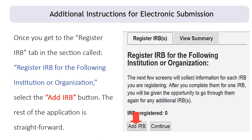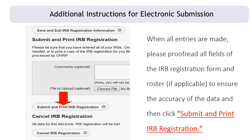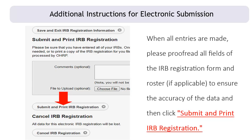Once you get to the Register IRB tab in the section called 'Register IRB for the following institution or organization,' select the Add IRB button. The rest of the application is straightforward. You will need to be sure all required asterisk fields are completed. Once you have entered information on each screen and proofread all data fields, click on the Save and Continue button to move to the next section. When all entries are made, proofread all fields and then click Submit and Print IRB Registration.